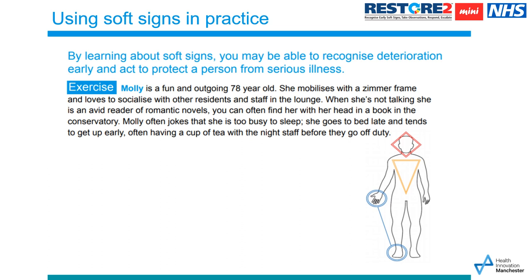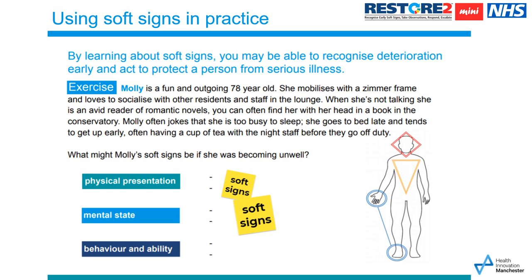We're going to do an exercise now to put soft signs into practice. Molly is a fun and outgoing 78-year-old. She mobilises with her Zimmer frame and loves to socialise with other residents and staff in the lounge. When she's not talking, she's an avid reader of romantic novels. She goes to bed late and tends to get up early, often having a cup of tea with the night staff. If Molly was your person to care for, what might her soft signs be if she was becoming unwell?